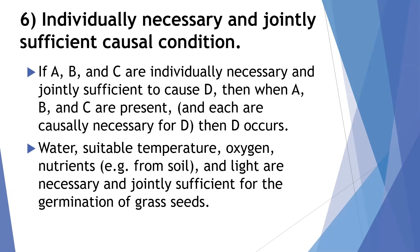So, for example, having water, a suitable temperature, oxygen, nutrients from the soil, carbon dioxide that's not on the list, light, these things are necessary and jointly sufficient for the germination of grass seeds. Now, I'm not a botanist. Maybe I left something else out. But you see what we have, right? You identify all the necessary things, and then together, if they produce the effect in question, then you have the individually necessary and jointly sufficient causes.